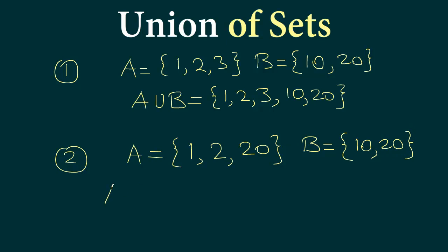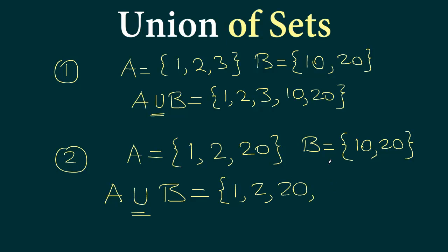Now what is A union B? We know it is a set, so we write all elements of A: 1, 2, 20. Then we write all elements of B: 10, 20. But wait — that second 20 should not appear, because we do not repeat elements in a set. So A union B is simply {1, 2, 20, 10}.